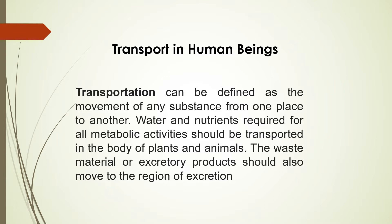Now if we talk about simple organisms, in simple organisms that system is not so well defined. The transport may take place just through diffusion. In case of a simple or very lower organism, transport is done by just a simple process that we call diffusion. But when we talk about human beings or higher organisms, there is a need of a well-defined system, which in case of human beings we call the circulatory system.